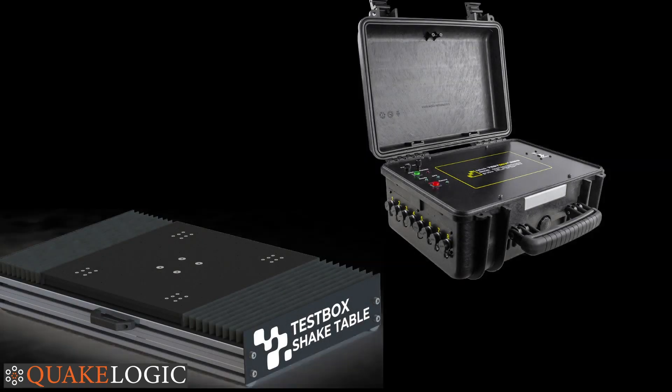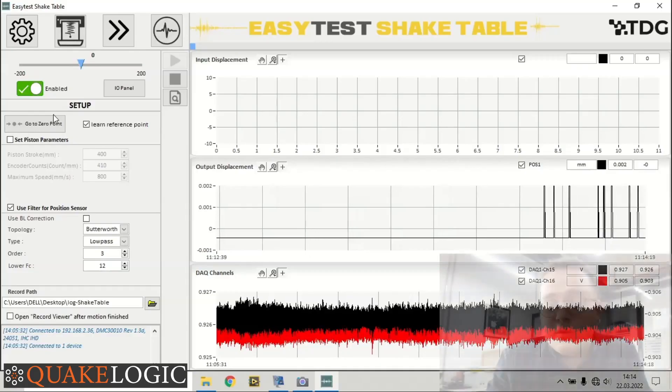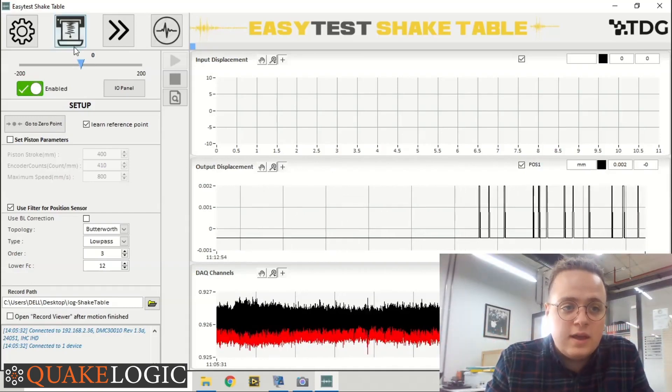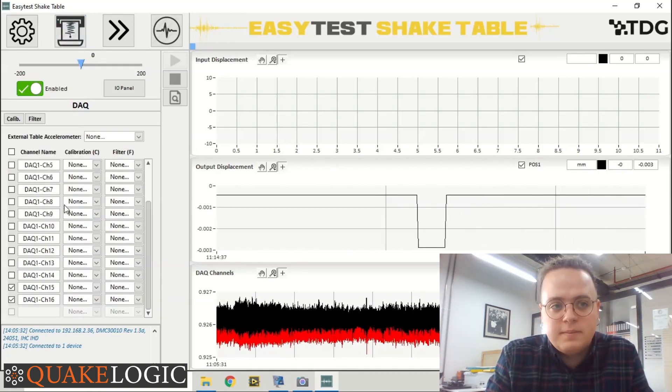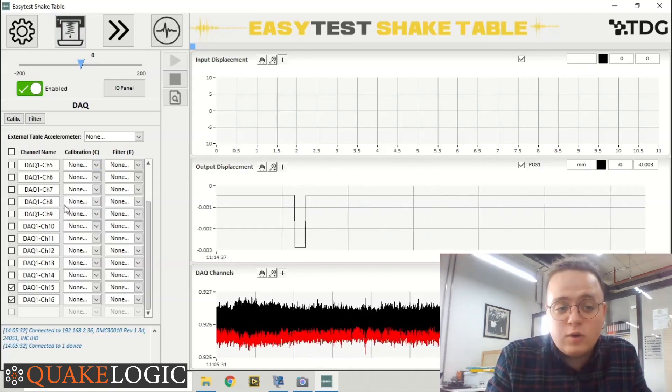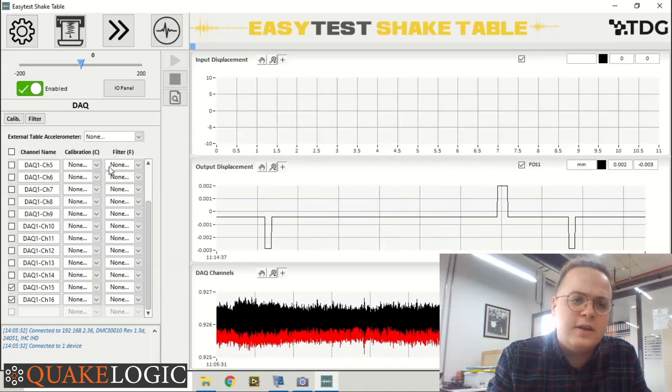In order to configure the data acquisition device, you may click on the second window and the table for all the channels of the data acquisition device will appear. By using this table we can calibrate or filter each channel of the data acquisition device separately.